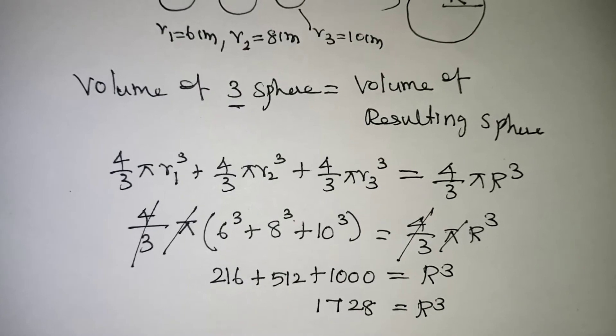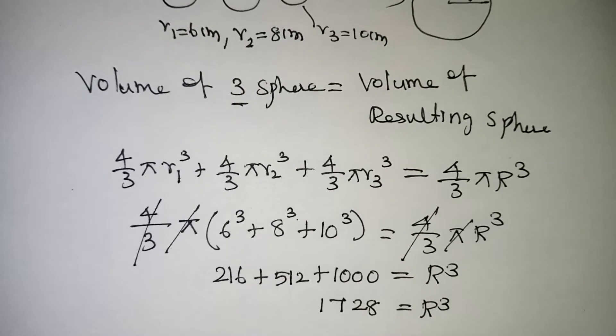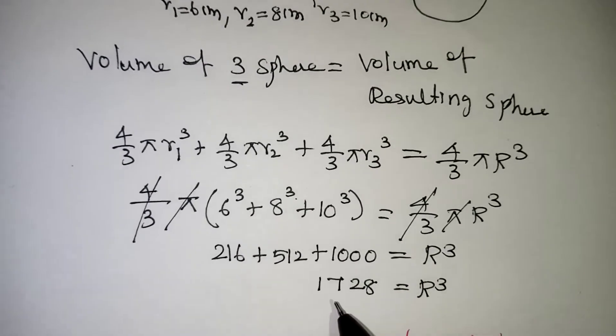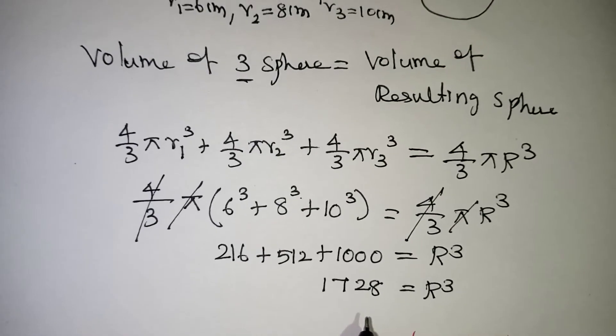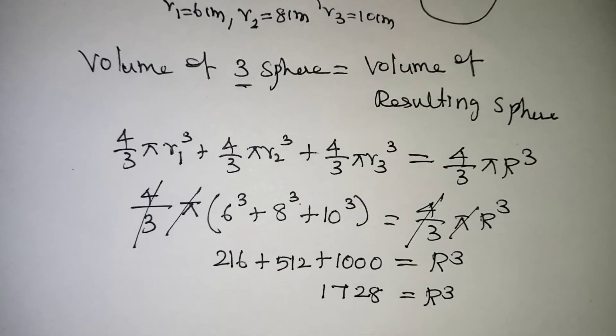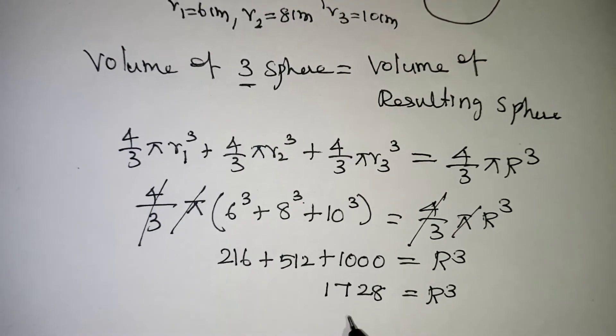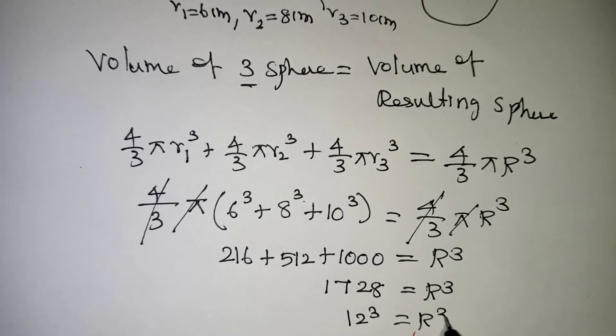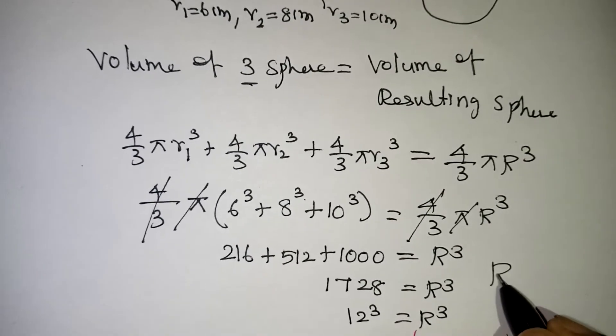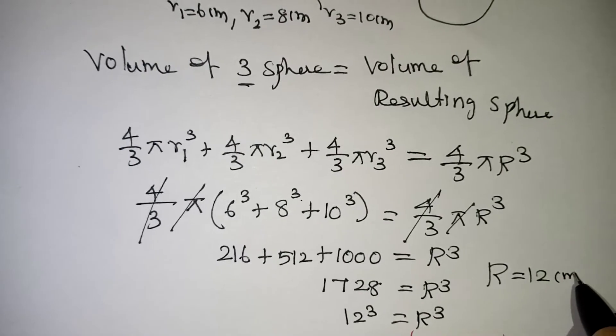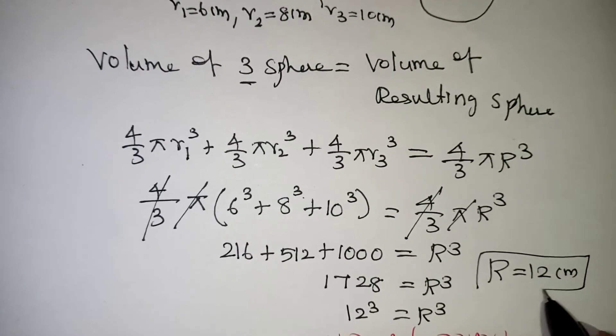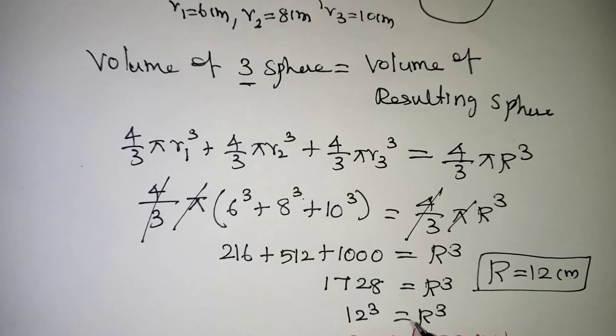Children, try to learn the cube values up to 20 at least, that will help you in your exam. If you know the cube value you can write it directly, or else we have to go for the prime factorization. So this is 12 cube value actually. 12 cube equals capital R cube. So we can write capital R is equal to 12 centimeter. If you don't know the value directly, this is the way of doing.